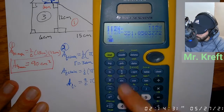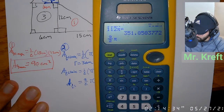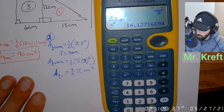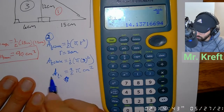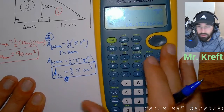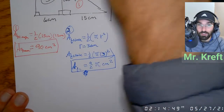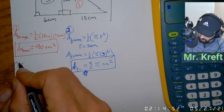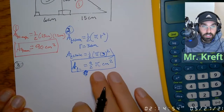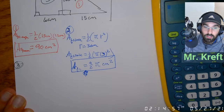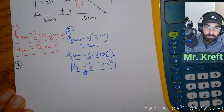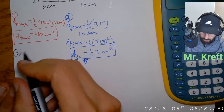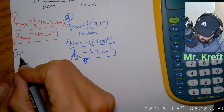I'm not going to approximate that right now because we're going to be adding all the areas together, and rounding early might mess us up. So I'll keep nine-halves pi as my exact answer. Next, we're going to find the area of the rectangle.